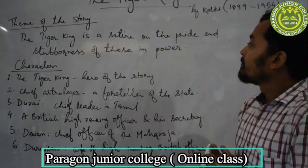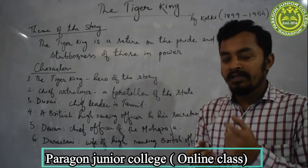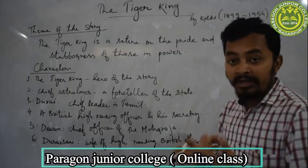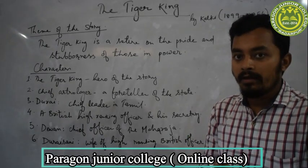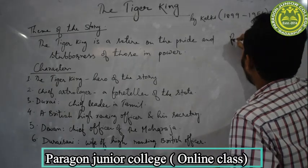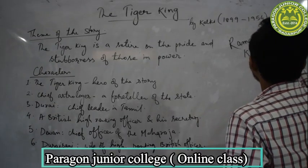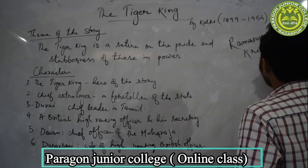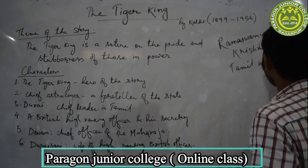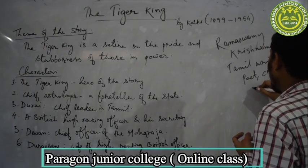Well now, we shall start discussing a very interesting chapter from the supplementary reader. The name of the story is 'The Tiger King,' written by Kalki. Kalki is the pen name — his full name is Ramaswami Krishnamooti. He was a Tamil writer, poet, critic, and an activist.